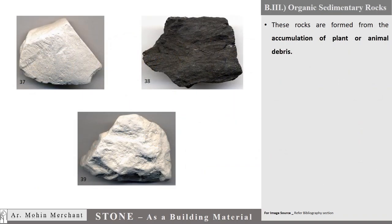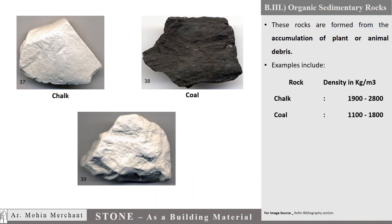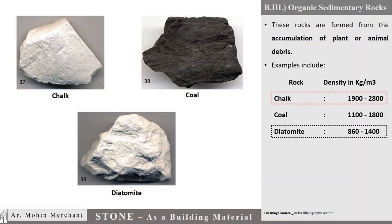Organic sedimentary rocks are formed from the accumulation of plant or animal debris. Examples include Chalk, Coal, and Diatomite. Density of these rocks varies from 860 to 2800 kg per cubic meter.